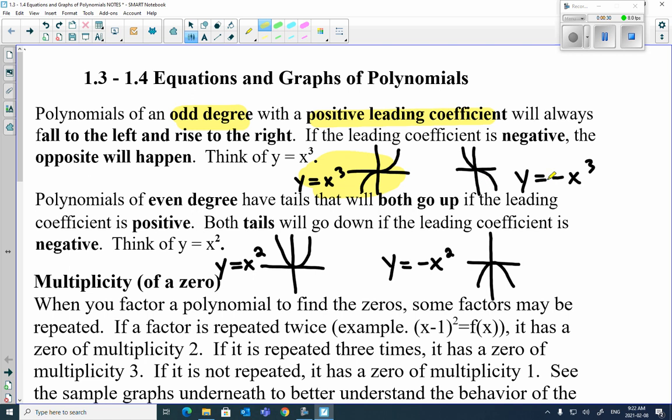So if it's negative, then we flip everything around. If the leading coefficient is negative, the opposite will happen. So this is if there's a negative in front of it. So that's with odd degree.